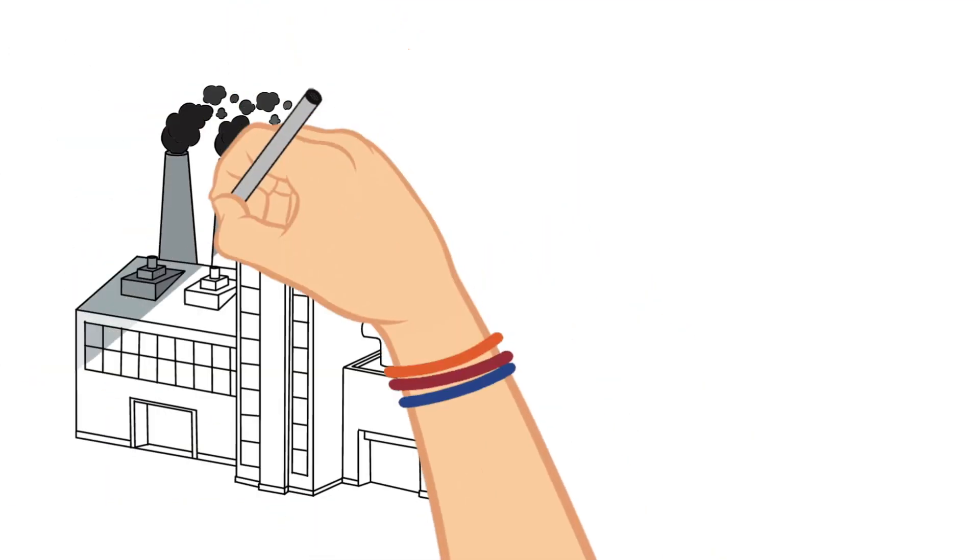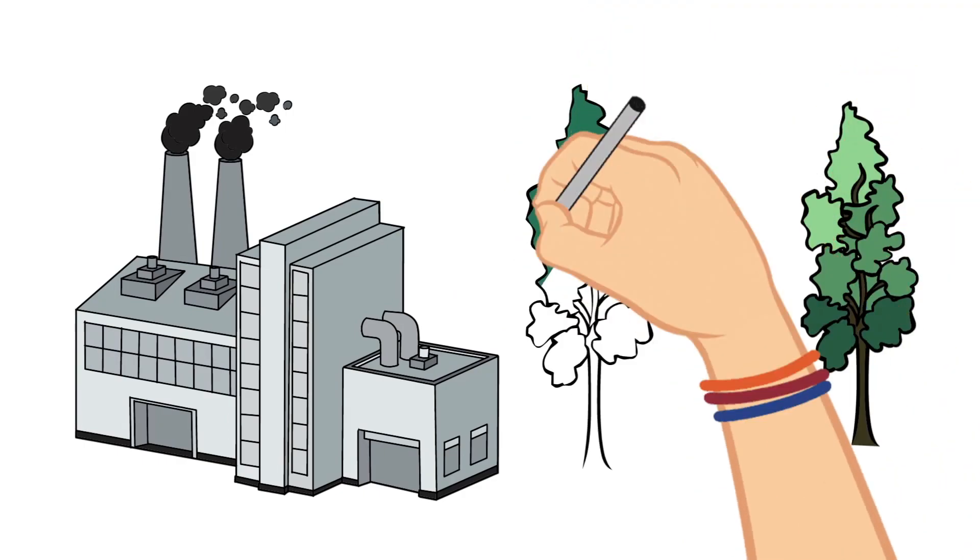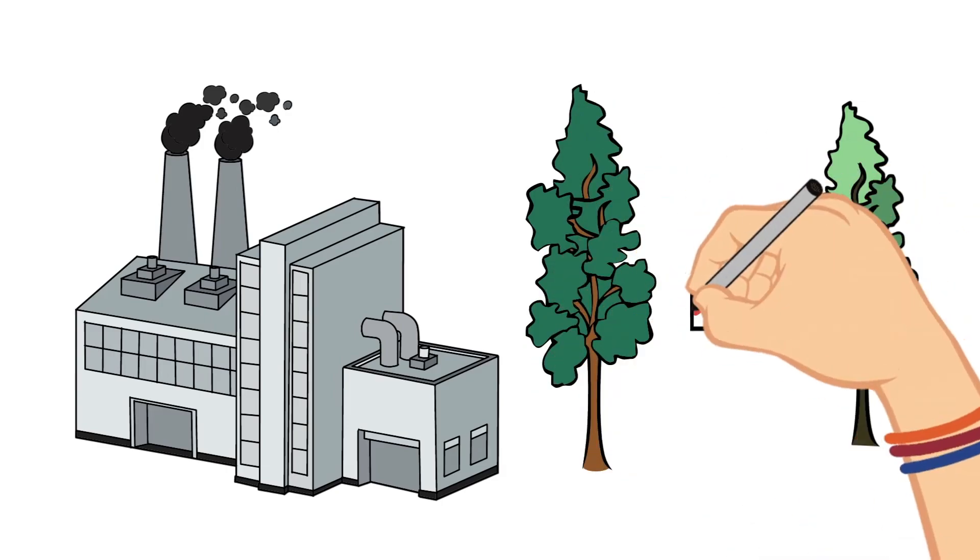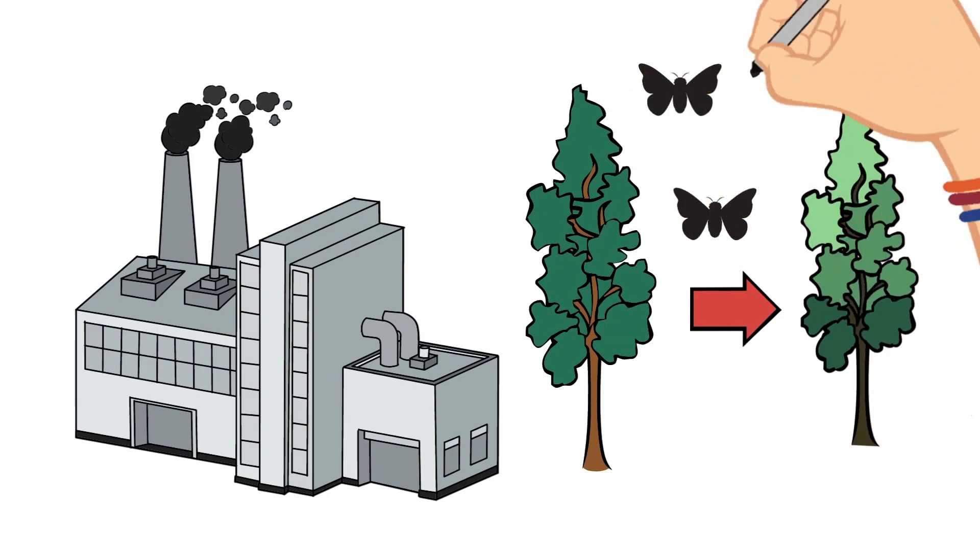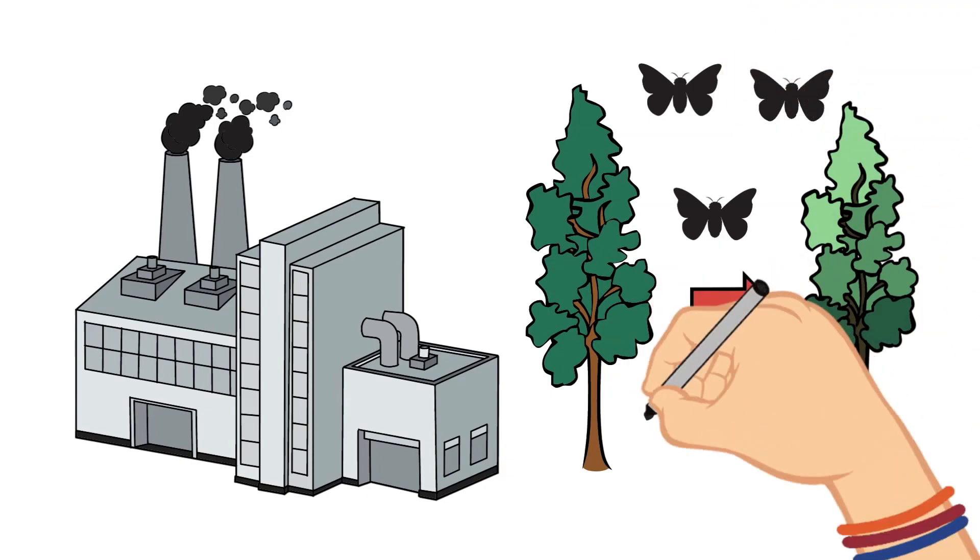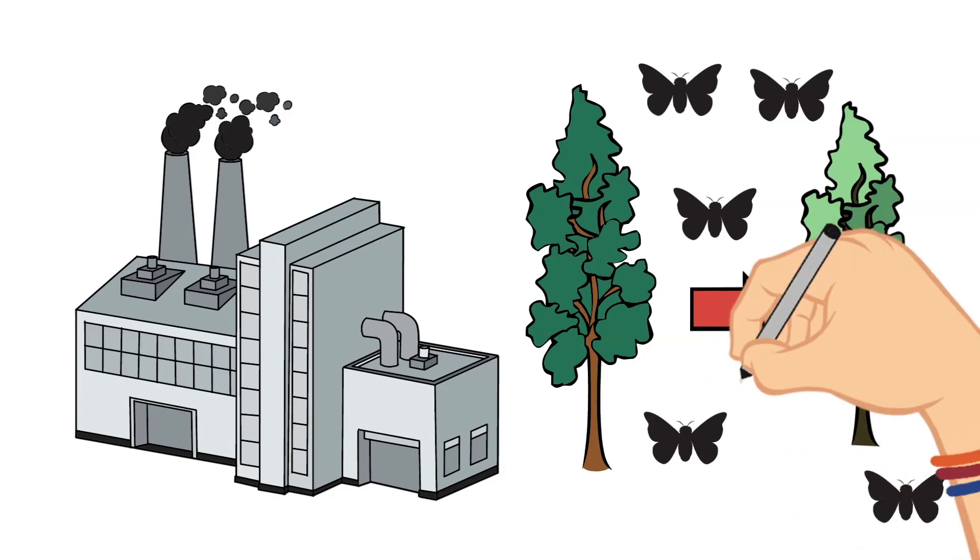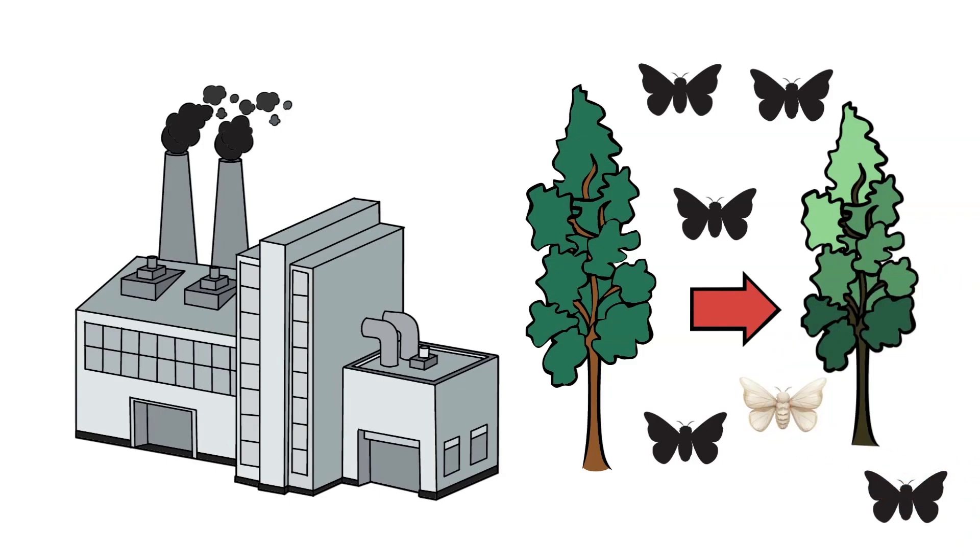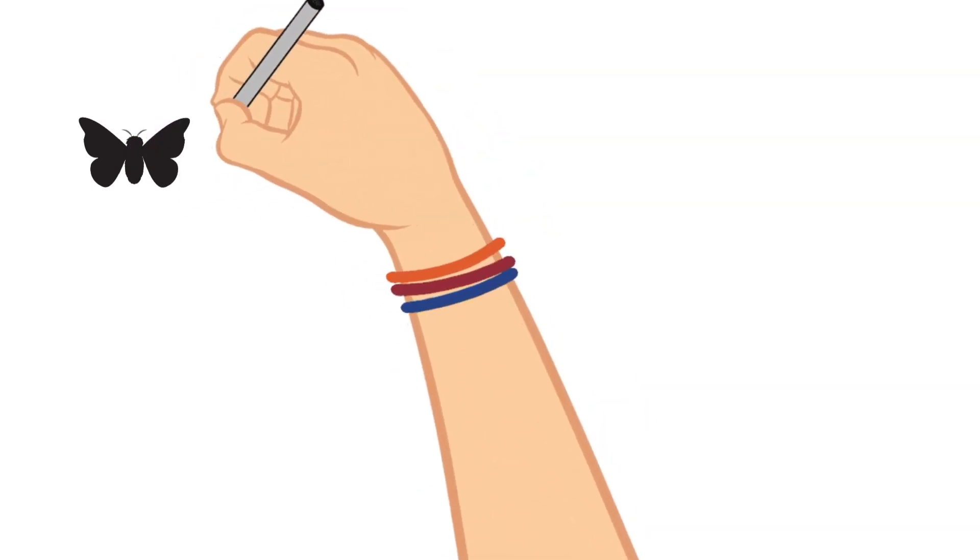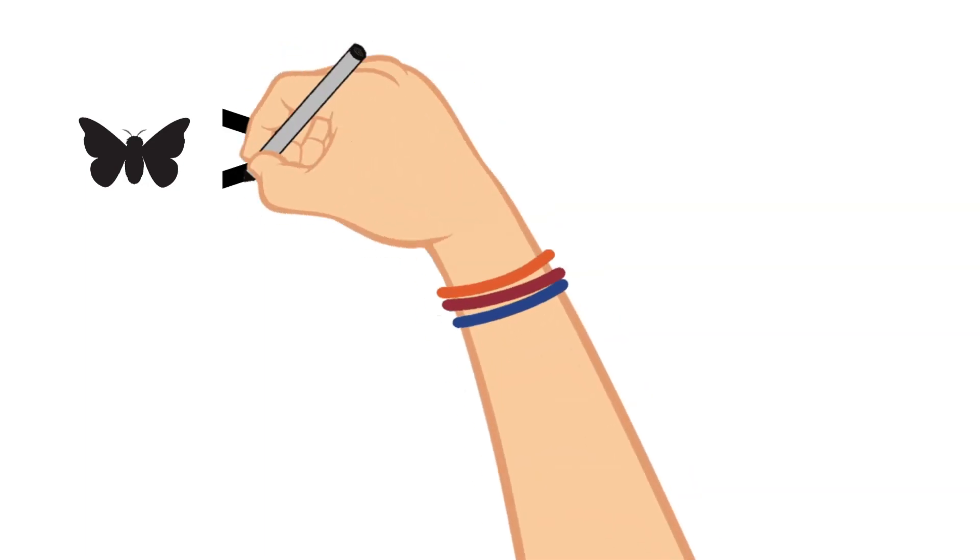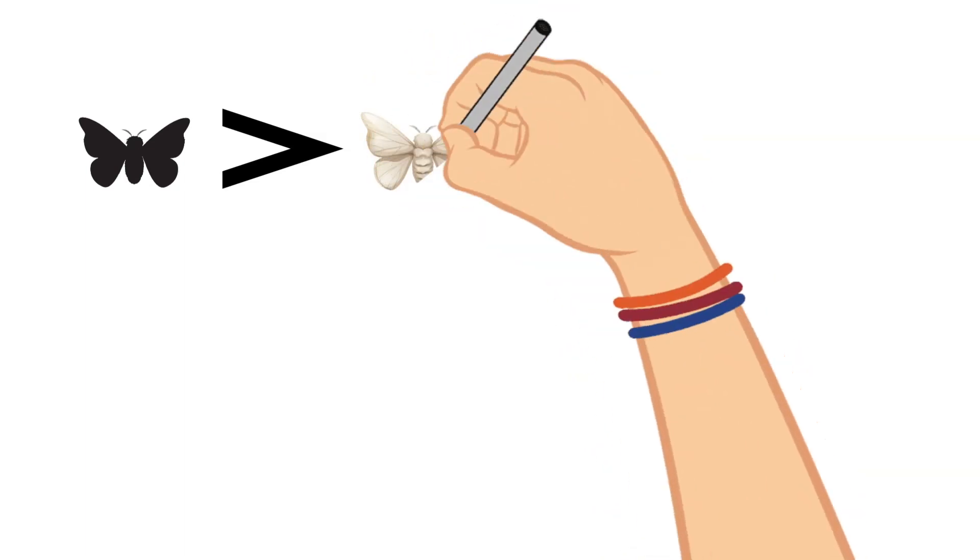Now, when the industrial revolution happened and many factories were built, a lot of pollution started being pumped out into the environment. This soot turned the trees black. Now, the birds could see the light colored moths and they began to prey on them. In this instance, the dark colored moths of the same species had an advantage because they could blend into the dark color of the trees. So, the majority of moths in this species then became dark because the birds ate all of the light ones and the dark ones survived and passed their traits on to the next generation.